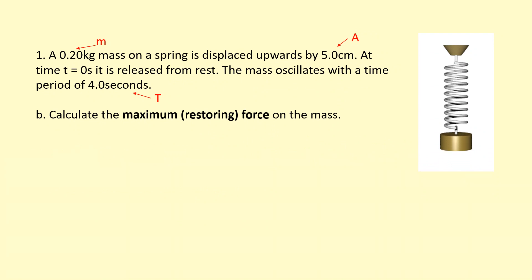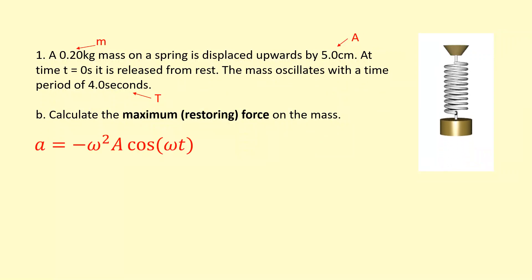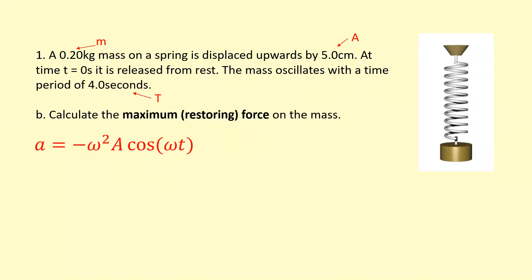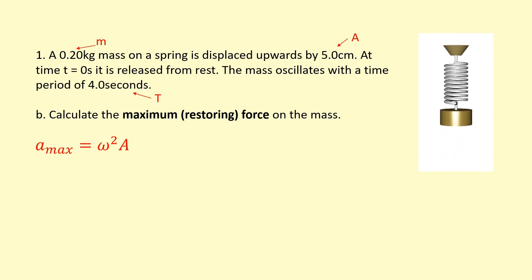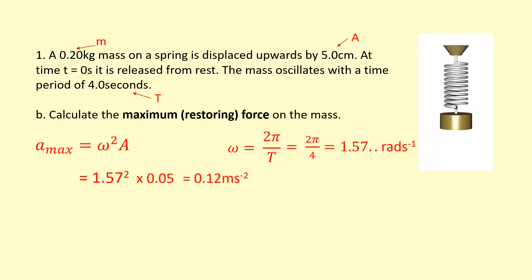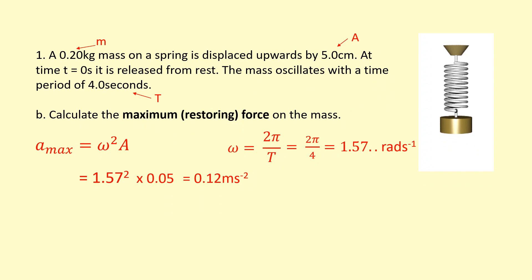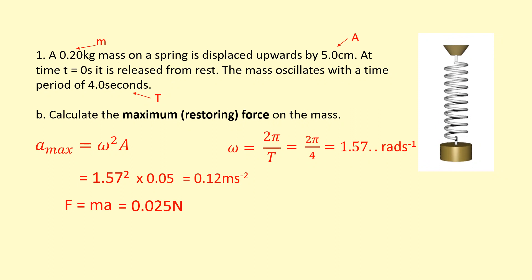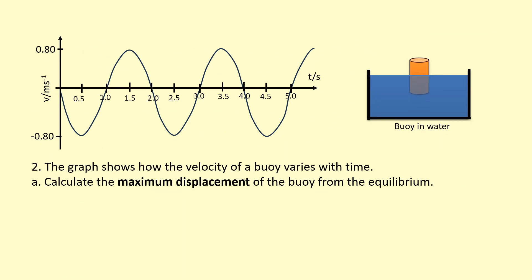For part b, we calculate the maximum restoring force. We need the maximum acceleration first — at maximum, cos(ωt) = 1, so maximum acceleration = ω²A. Using ω = 1.57 rad/s from the previous part and A = 0.05 m, we get the maximum acceleration. Then multiplying by the mass of 0.20 kg gives the maximum force.